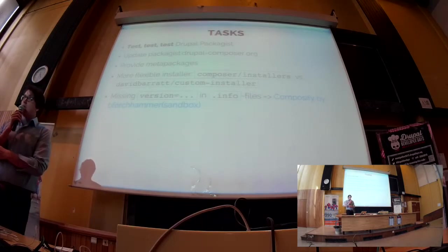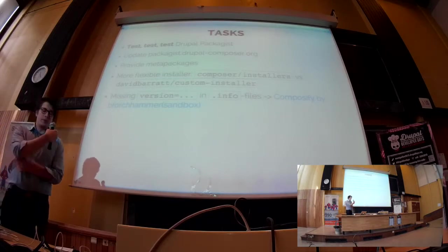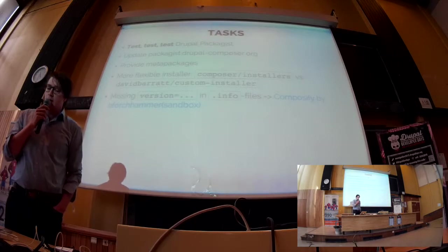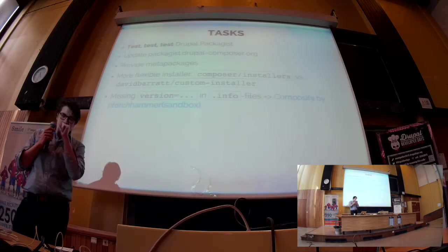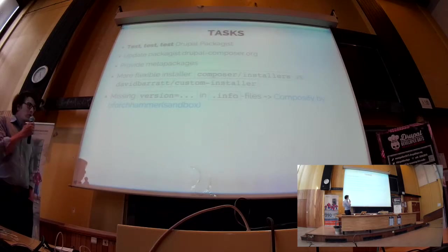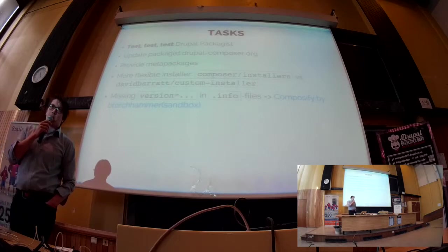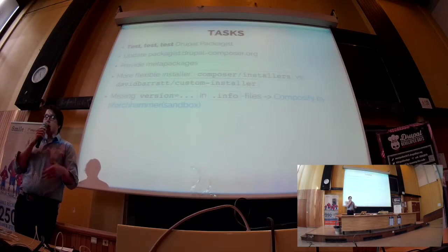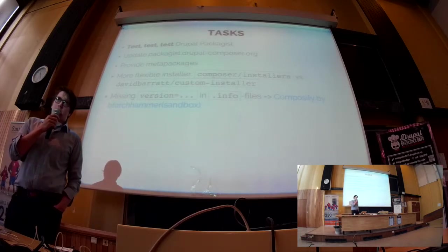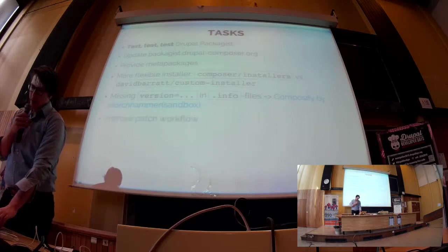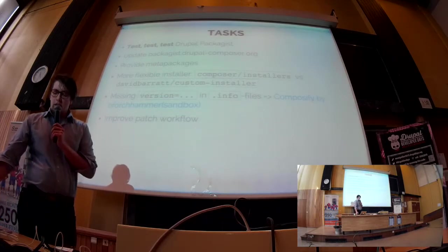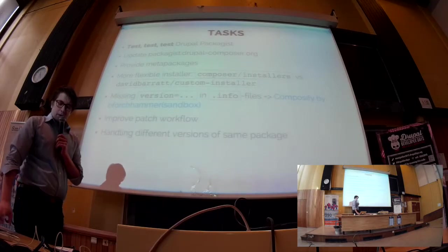One issue when using Drupal Composer is that in some cases you have missing version numbers in your .info files, which leads to problems if any module requires specific versions of other modules. To solve that, there is a sandbox on Drupal.org called 'Composify' where we try to figure out those problems — it's a module you enable that adds additional version information to your .info files. We also need to look at handling different versions of the same package, and managing frontend libraries and assets with Composer.